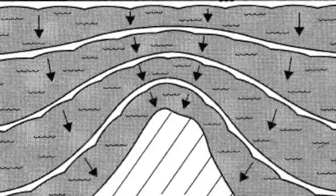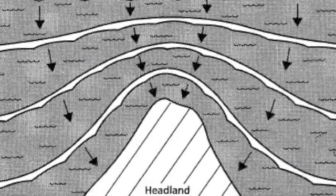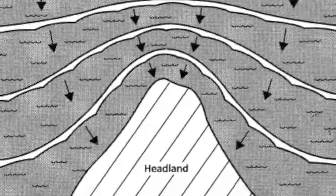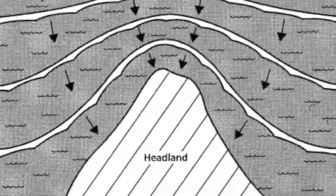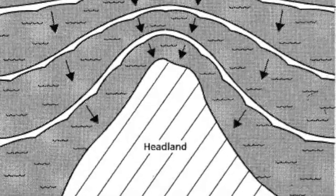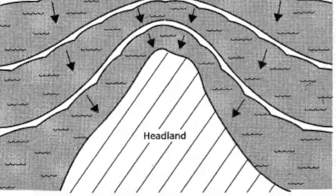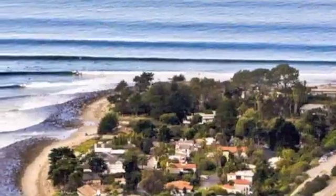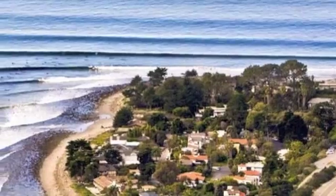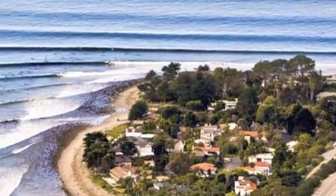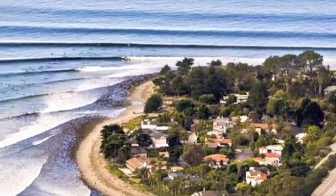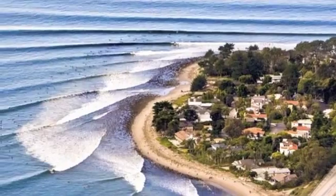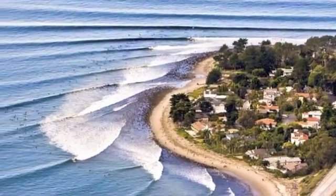Hey folks, Mr. P here. Wave refraction can be seen on every coastline. The basic idea is that waves travel faster in deeper water, so they bend around islands or points of land. Here is a classic example of a point break setup where the waves refract around the top of the point.